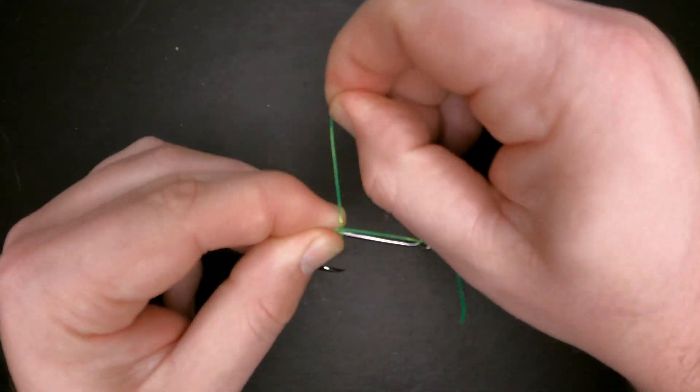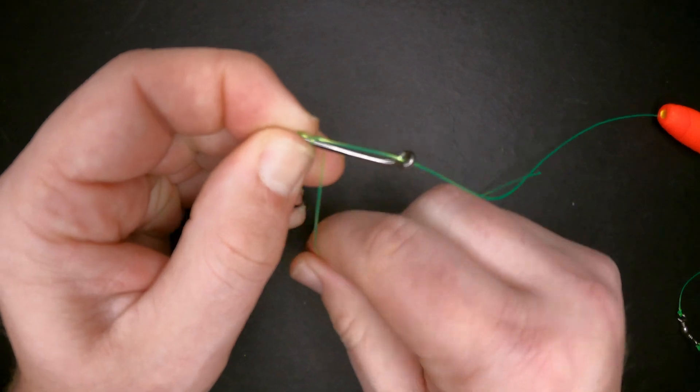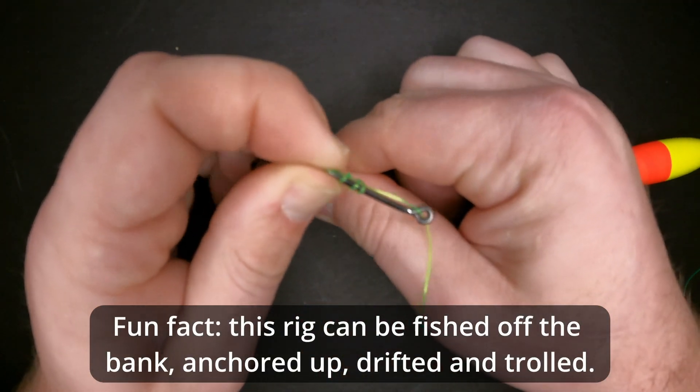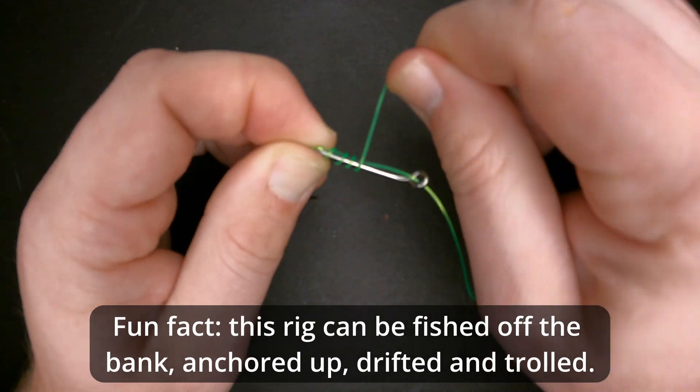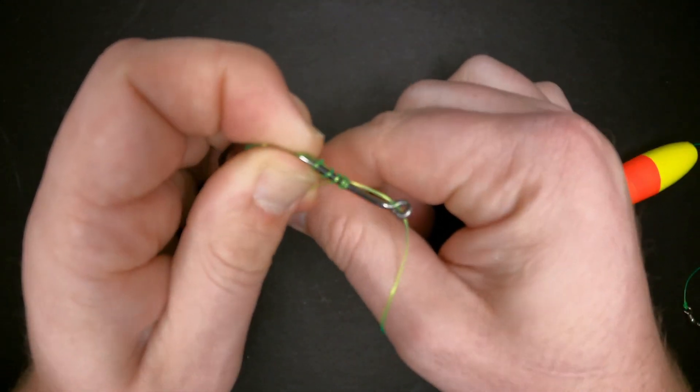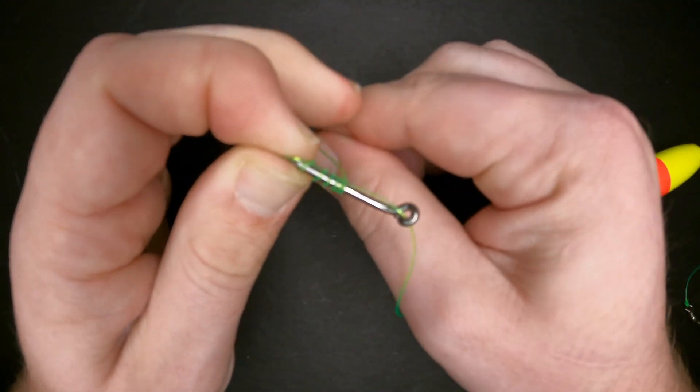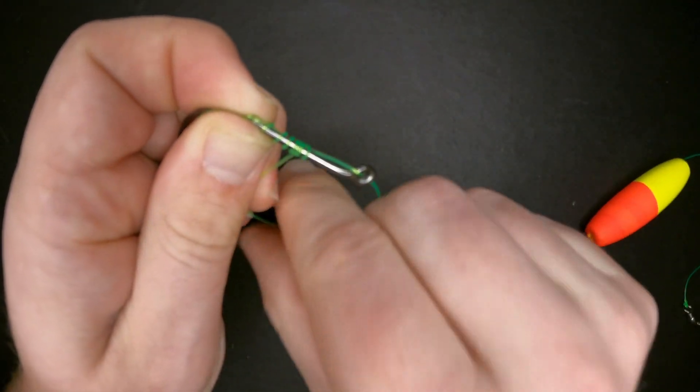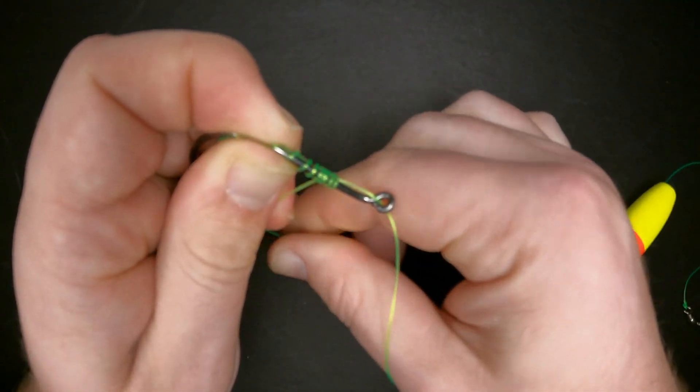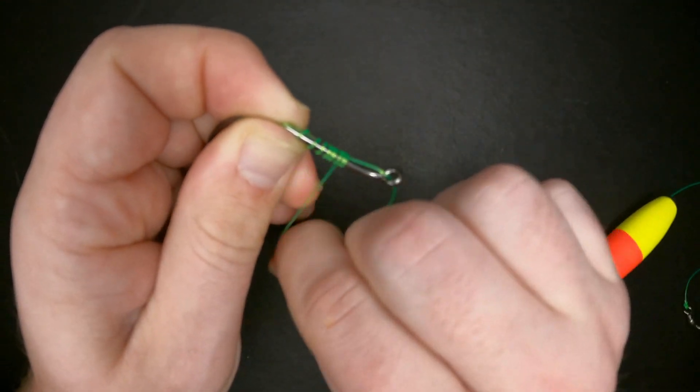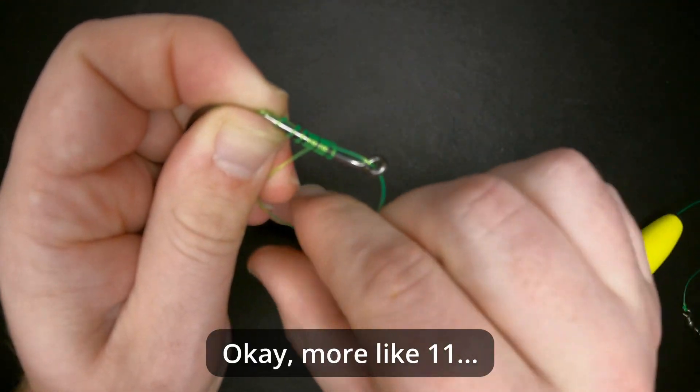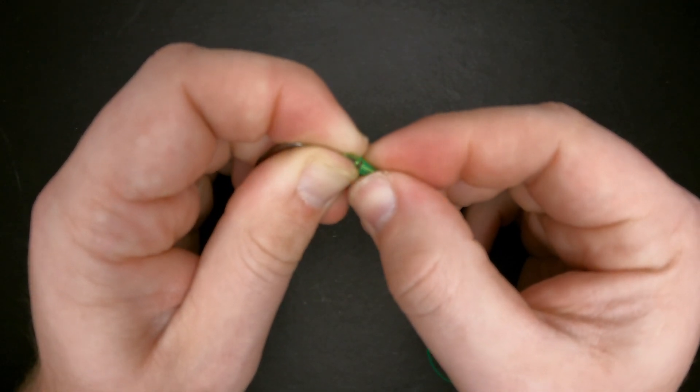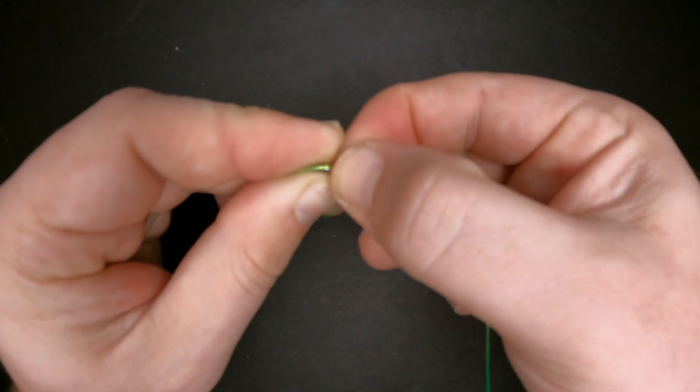I'm going to start wrapping the tag end around the shank and the main line here. I'm going to make about 10 wraps here. And once I've made my wraps I'm going to kind of bunch them together so it's easier to pinch and to keep them in place.